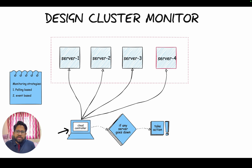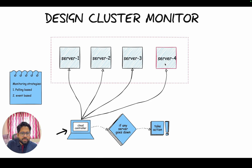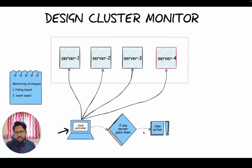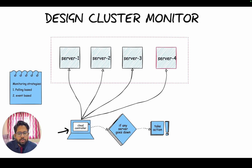You have a monitor, which you can call a cloud controller or anything. What it does is check the status of all of these servers. And if any server goes down, it needs to take some action — that action can be anything: informing you, alerting you, or spawning a new server. But this is the requirement, and we want to design this using ZooKeeper.